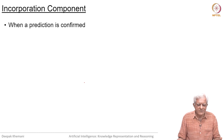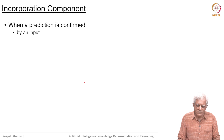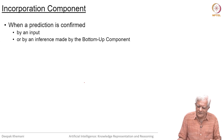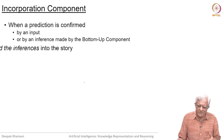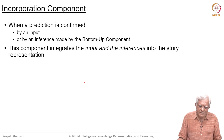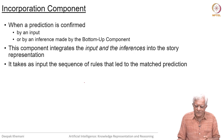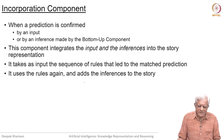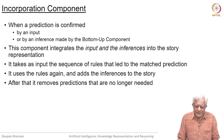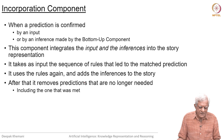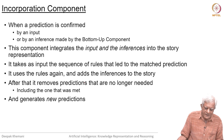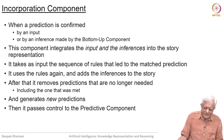The third phase is the incorporation phase. When a prediction is confirmed by an input — which could either be the input received from the story or an inference made by the bottom-up component — the incorporation component integrates the input and the inferences into the story representation. It takes as input the sequence of rules that led to the matched predictions, uses the rules again, and adds the inferences to the story. After that, it removes predictions that are no longer needed including the one that was met, and generates new predictions of what it expects to hear next, then passes control back to the predictive component.